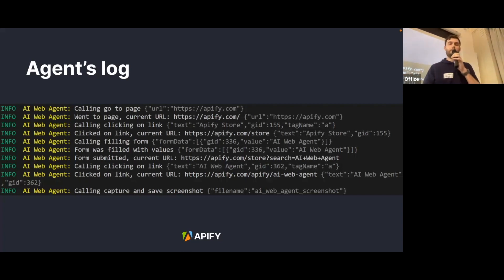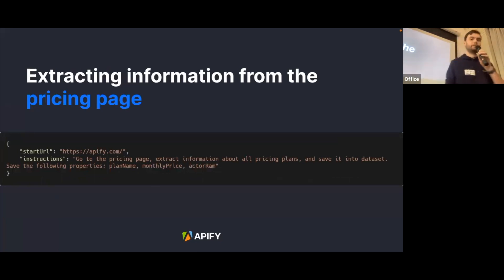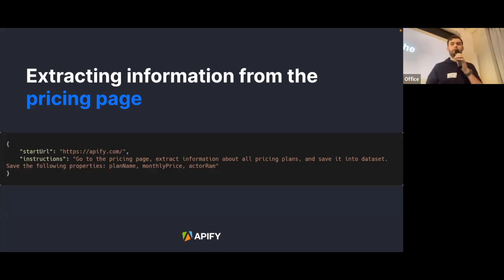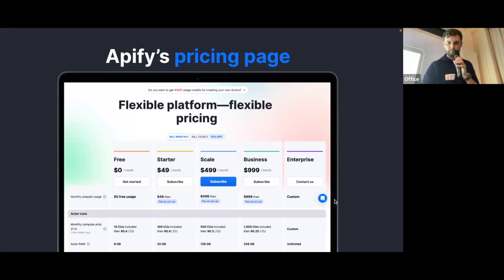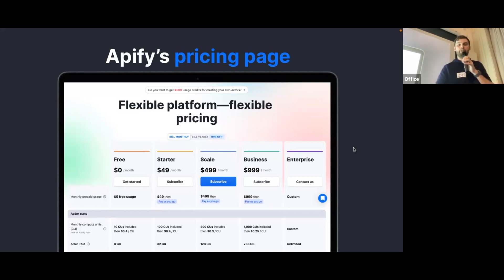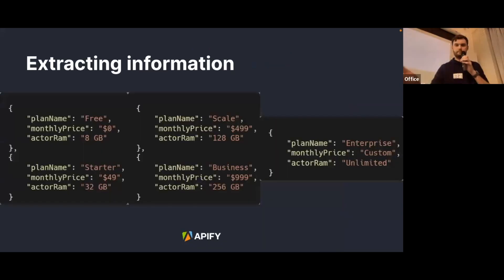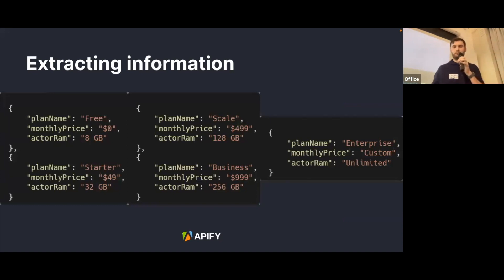The second example is about data extraction — we'll extract data from Apify's pricing page. We want to learn about all pricing plans and extract the plan name, monthly price, and RAM. Looking at Apify's pricing page, there are five plans; the free one has eight gigabytes of RAM and the enterprise has unlimited. The LLM successfully extracted all five pricing plans with correct names, prices, and RAM — really nice.